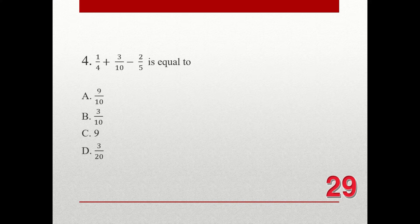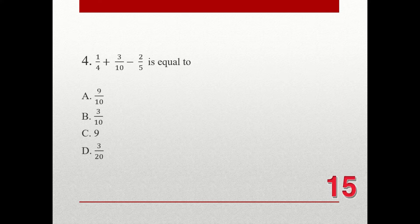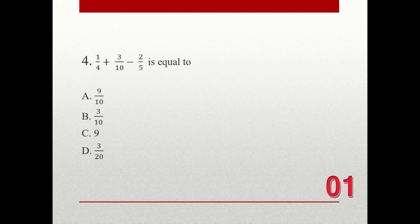Question number four. One-fourth plus 3 over 10 minus 2 fifths is equal to: A. 9 over 10. B. 3 over 10. C. 9. D. 3 over 20. The correct answer is D. 3 over 20.